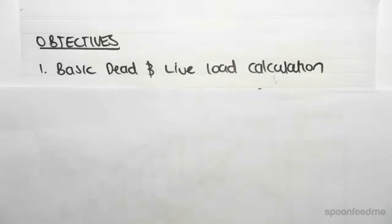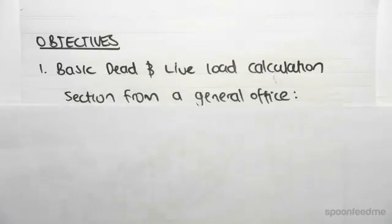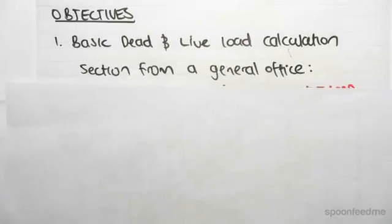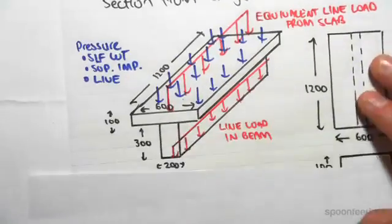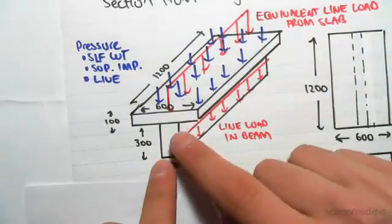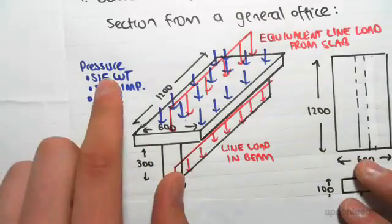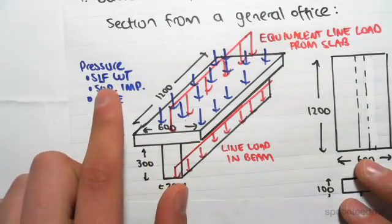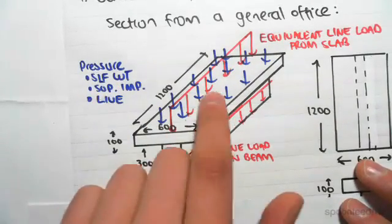Hey guys, the objective of this video is to do a very basic dead and live load calculation. We're going to be given a section from a general office. Say we have this slab and a beam like this. I've drawn in blue the pressure which is due from self-weight, superimposed, and live loads.